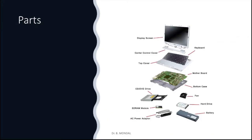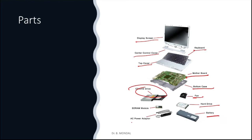Here you can see the different parts of a laptop assembled. If you see, there is the display screen, then the keyboard, central control converter, top cover of the laptop, CD drive, motherboard, bottom case, fan, hard disk drive, battery, AC adapter, and RAM module. So if you open your laptop, these are the basic components you will find.